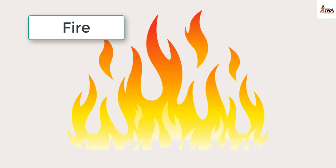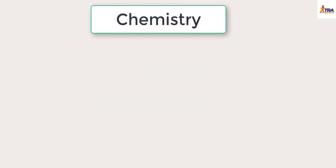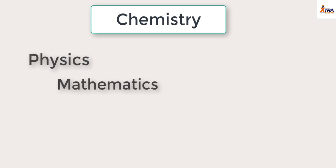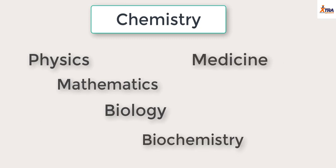Years later, discoveries and technologies were brought in day in, day out, and we are where we are today. Today, science is divided into several branches, one of them being chemistry. Chemistry happens to be the central science because it plays a part in every other field of science — from physics to mathematics to biology to biochemistry to medicine to agriculture — because each of these fields involves materials and the changes of materials from one form to another, and the production of new species from old raw materials.